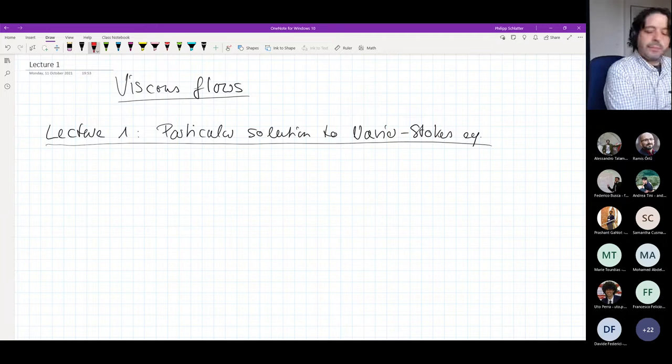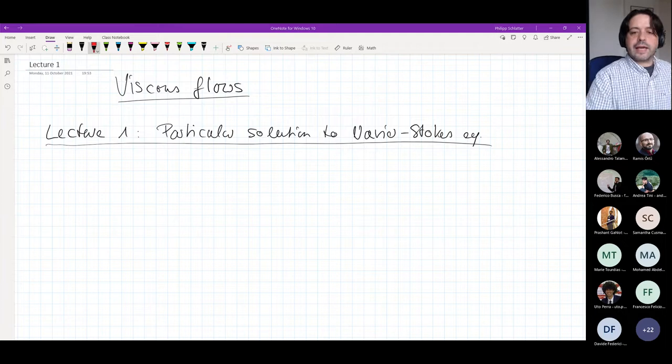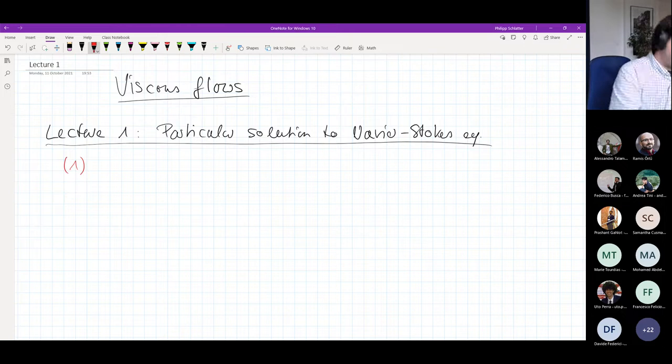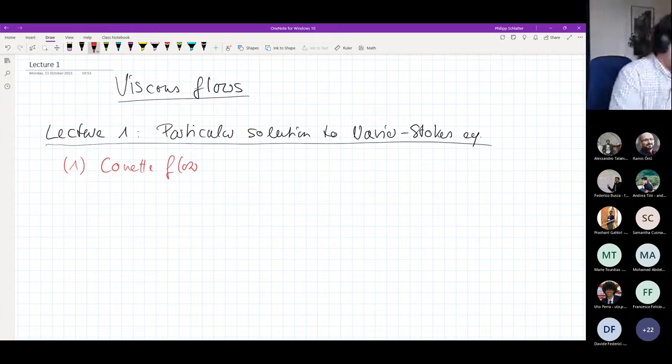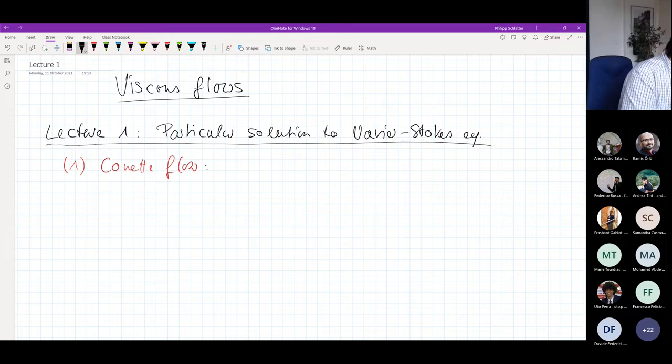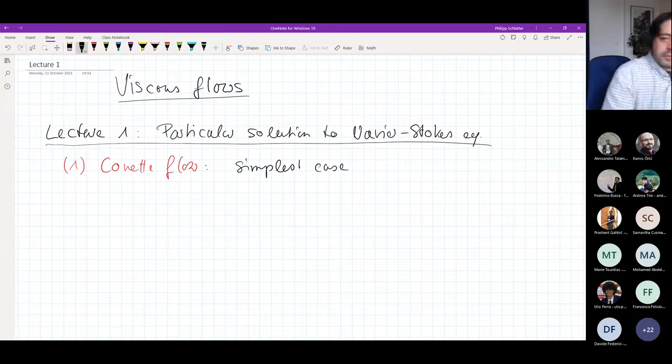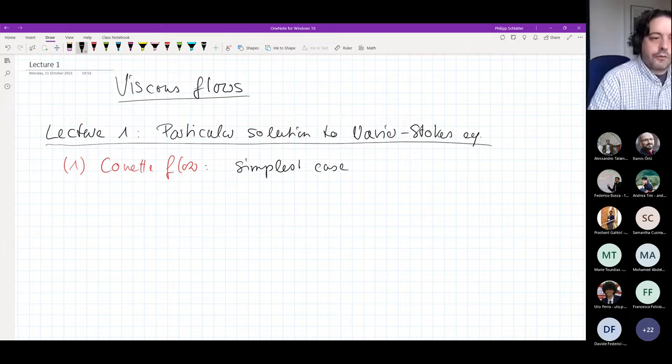Let's start now with the simplest possible case that we can think of when it comes to calculating exact solutions to Navier-Stokes. The first example that we will look at is the example of so-called Couette flow. The reason for that is this is the simplest case, apart from just having zero velocity everywhere.